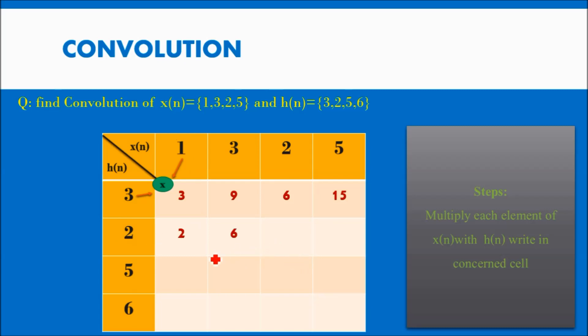Next: 2 into 3 is 6, 2 into 2 is 4, 2 into 5 is 10. 5 into 1 is 5, 5 into 3 is 15, 5 into 2 is 10, 5 into 5 is 25. 6 into each gives 6, 18, 12, and 30. Calculate all the multiplications one by one. This is the second step: multiplying each element and writing into the corresponding cell.